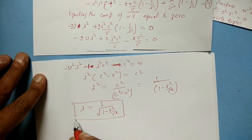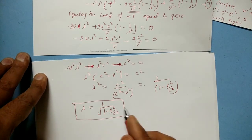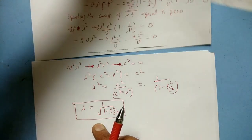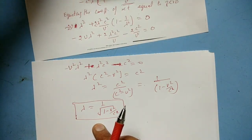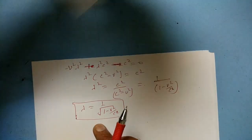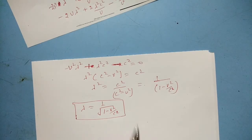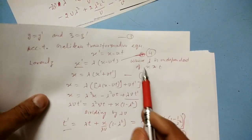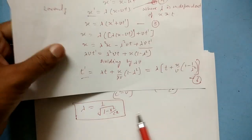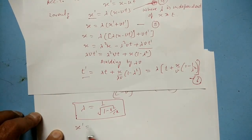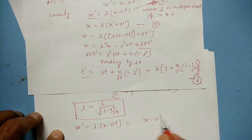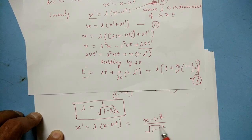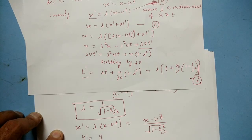Now that we have evaluated the constant λ, we substitute it back into equation 4. Since x' = λ(x - vt), the space transformation gives x' = (x - vt)/√(1 - v²/c²). By symmetry, y' = y and z' = z.